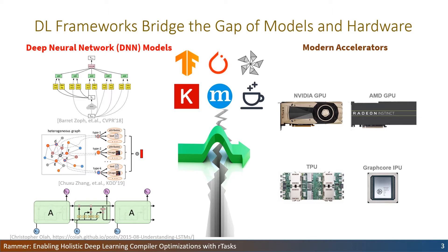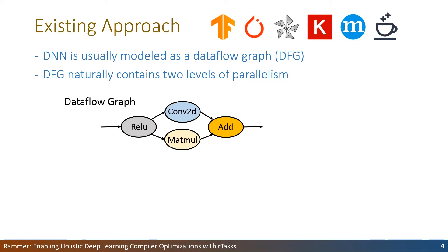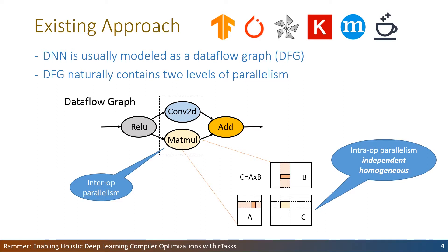In existing frameworks, a DNN is usually modeled as a data flow graph, where each node represents an operator with a unit of computation like a matrix multiplication, and an edge represents the dependency between operators. The data flow graph representation naturally contains two levels of parallelism: the first level is inter-operator parallelism, where operators without dependencies may run in parallel; the second level is intra-operator parallelism, where an operator has inherent internal data parallelism and can leverage hardware accelerators for parallel computation.